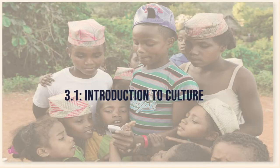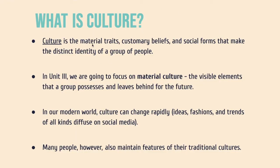So, introduction to culture. Section 3.1. Culture, as it's defined here, is the material traits, customary beliefs, and social forms that make the distinct identity of a group of people. Think about those three things: material traits — stuff that we can see, material goods we can hold; beliefs; and social forms — what kind of social roles do people take on, whether looking at male-female roles or kids versus elderly. In this unit, we're going to focus more on the material side of things — the visible elements that a group possesses and leaves behind for the future. These are things like architecture, clothing, art — things we can visibly study and use to analyze that particular culture's history.